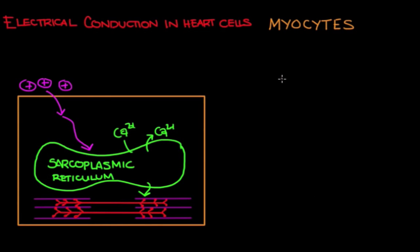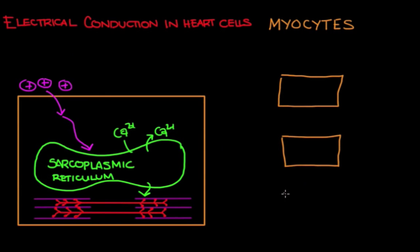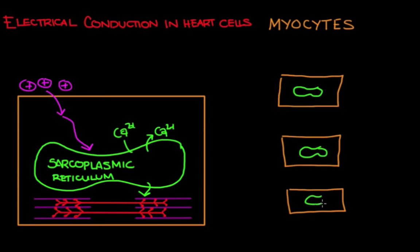Now we're going to talk about how electrical activity passes through heart cells. I'm going to draw out three heart cells, and we're going to draw the sarcoplasmic reticulum in each of them. At rest, the heart cell is slightly electropositive on the outside and slightly electronegative on the inside.